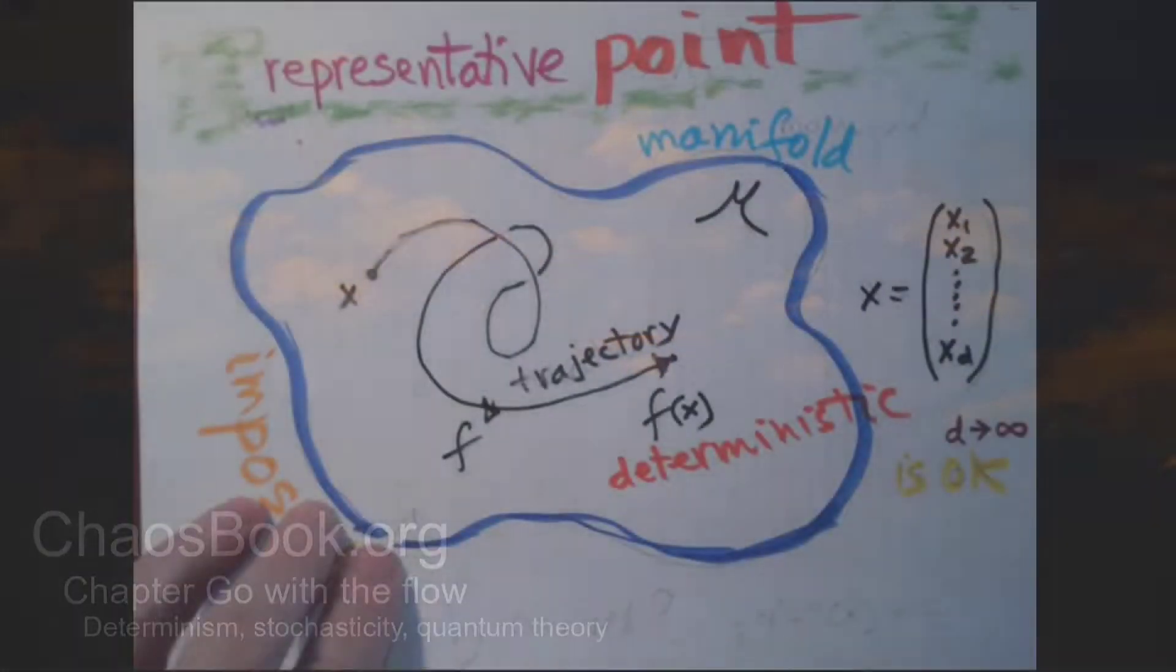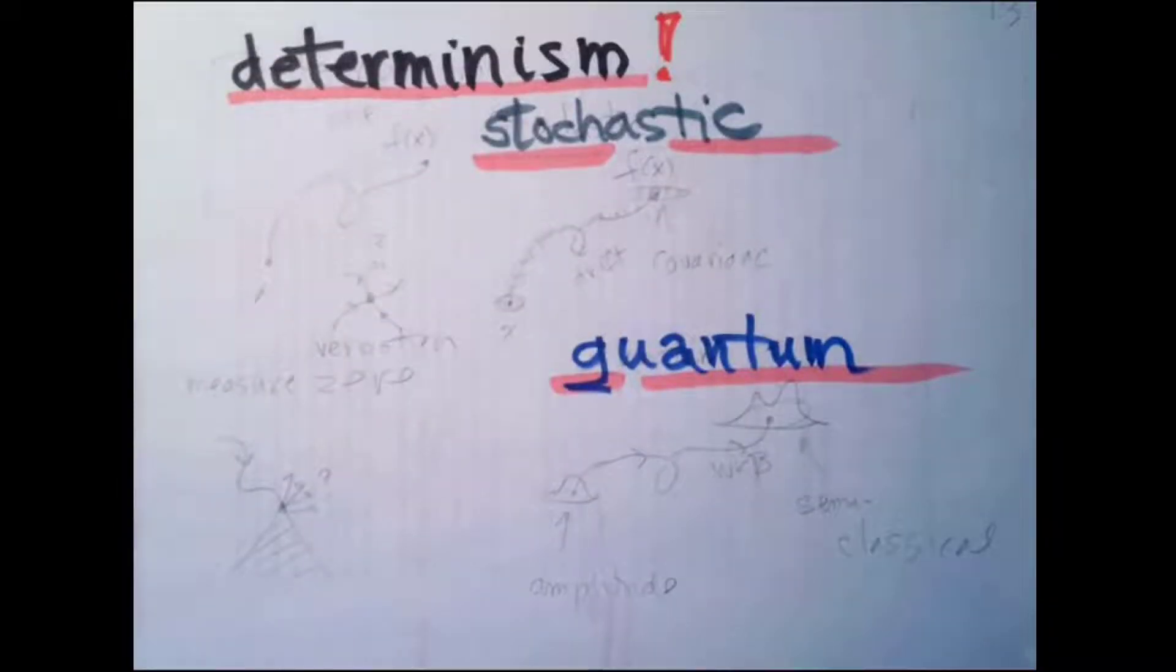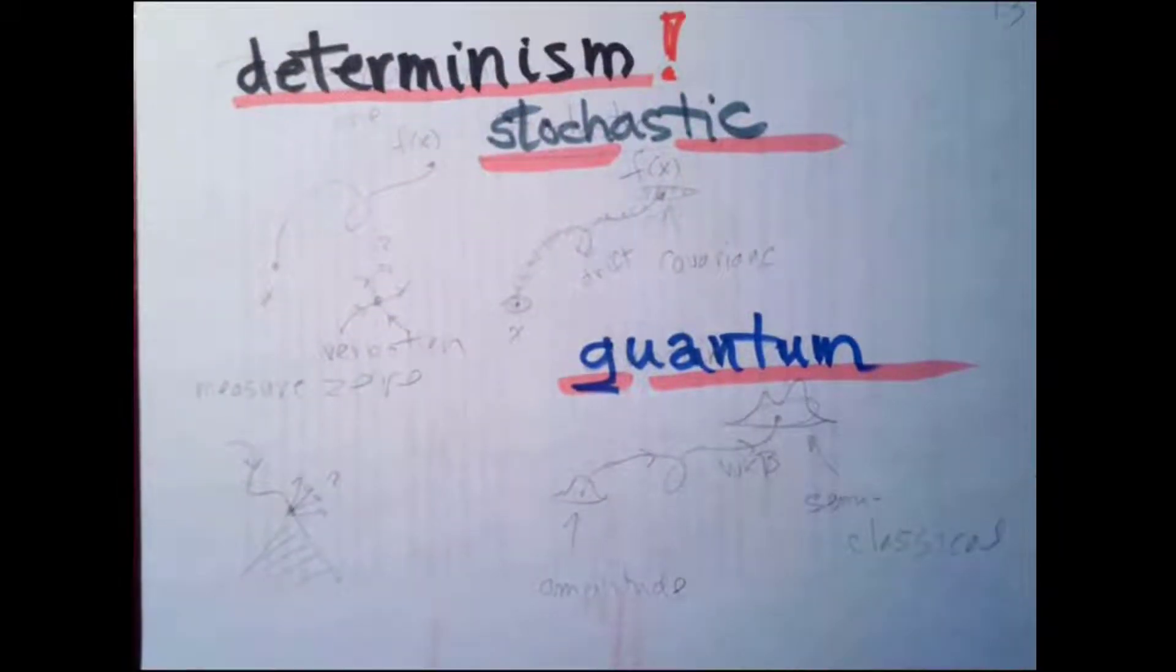But I want to go back to deterministic order. Why am I saying determinism? Many things that we, when we teach you dynamical systems, are fraudulent claims that we make.